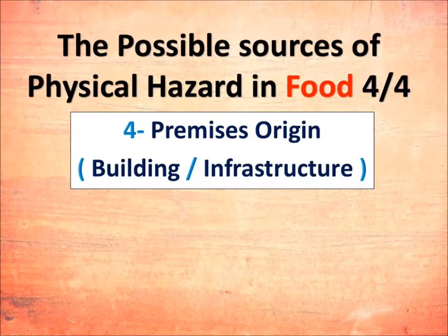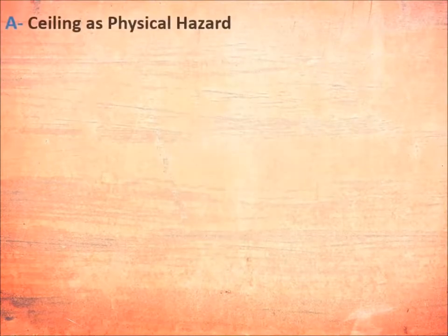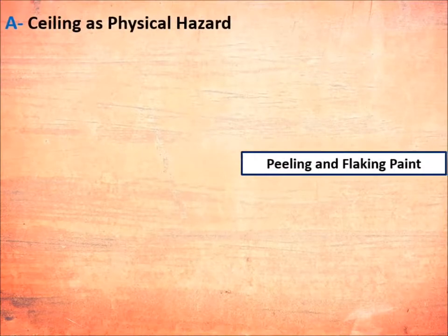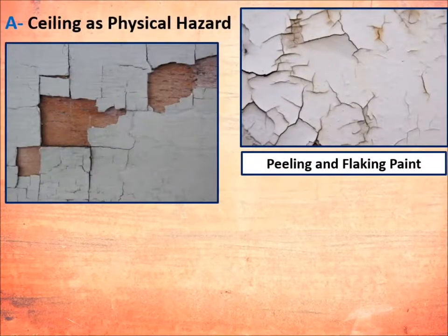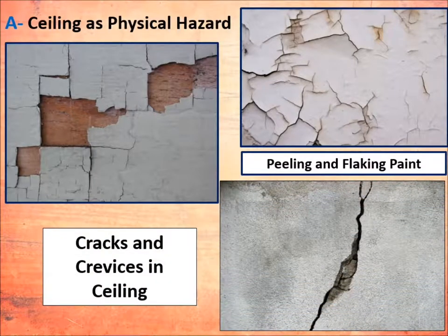First, in the ceiling as a physical hazard on food: peeling and flaking paint is a physical hazard, and cracks and crevices in the ceiling are also a physical hazard.